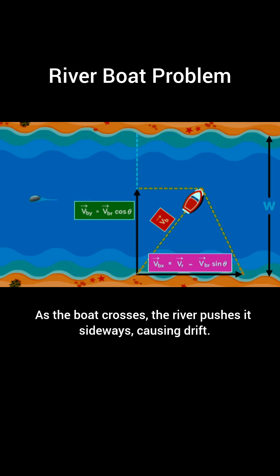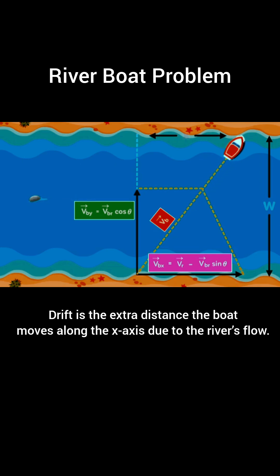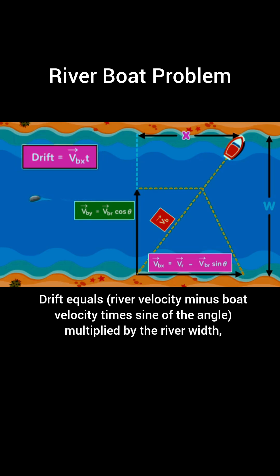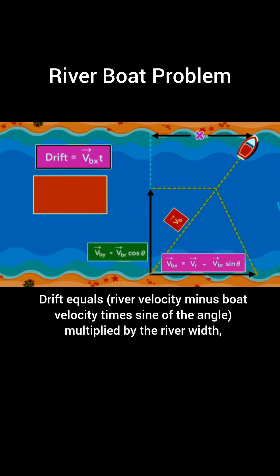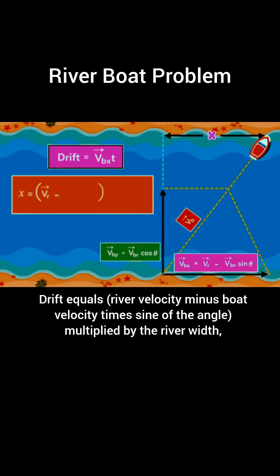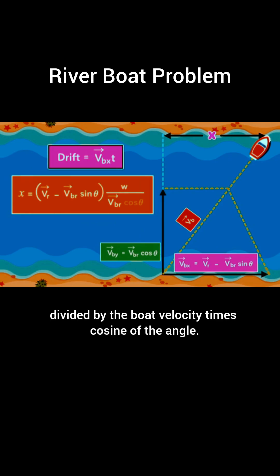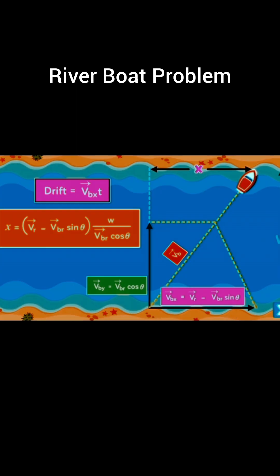As the boat crosses, the river pushes it sideways, causing drift. Drift is the extra distance the boat moves along the x-axis due to the river's flow. It is calculated as: drift equals river velocity minus boat velocity times sine of the angle, multiplied by the river width divided by the boat velocity times cosine of the angle.